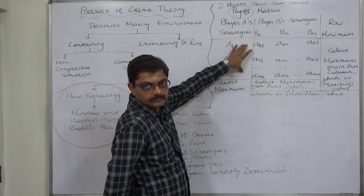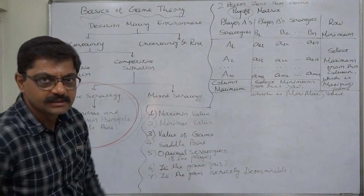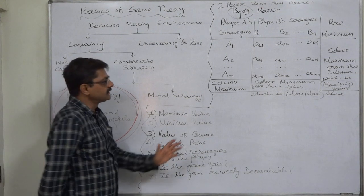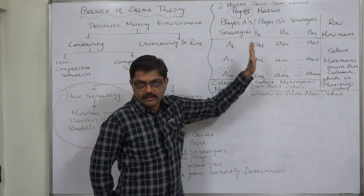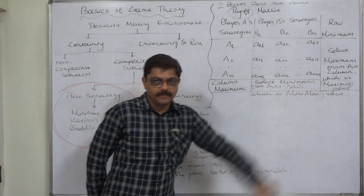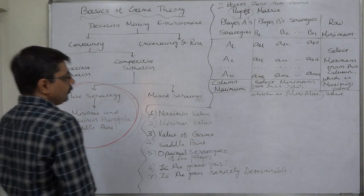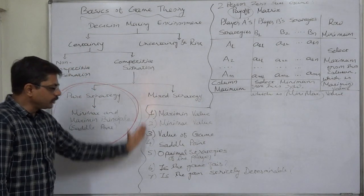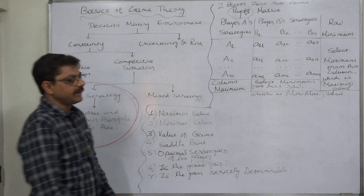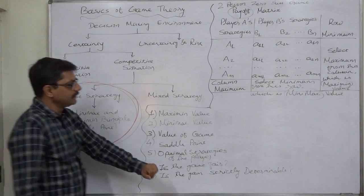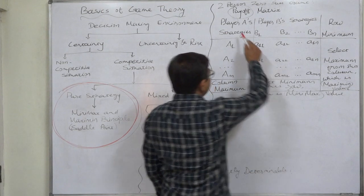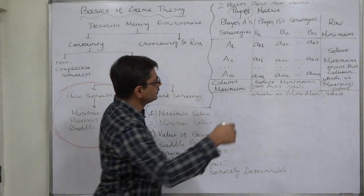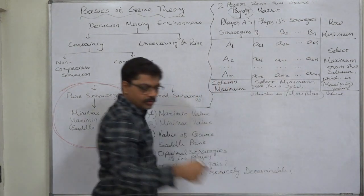This payoff matrix is written from a particular point of view — as a statistician or consultant. Assume that A is our client and B is the competitor, so we are going to make decisions for A; B is the opposite party. Now, let us discuss some important points about the two-person zero-sum game. The first is the maximin value. In this matrix, these are the strategies of player A — the player for whom we are doing the analysis — and these are the strategies for player B, the competitor.